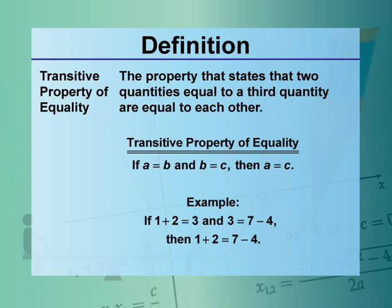Transitive property of equality: if A equals B, and B equals C, then A equals C.